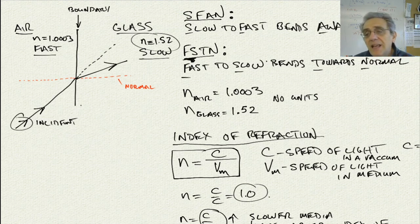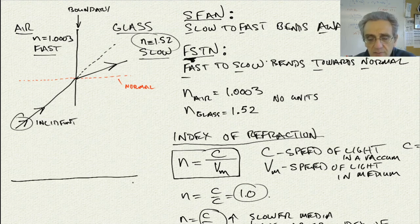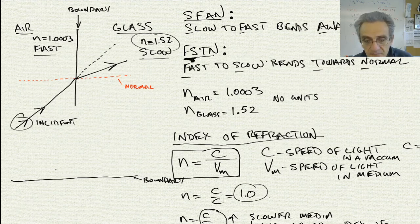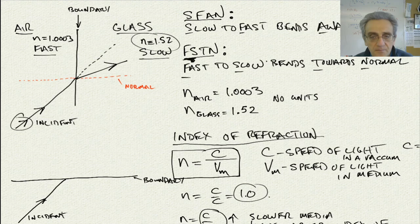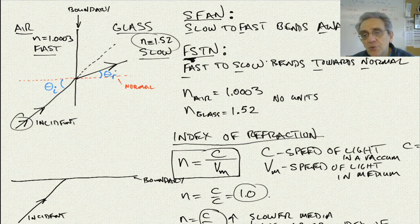The dotted line represents no refraction. Since we bend towards the normal, our direction goes closer to the normal, not away from it. Now let me annotate the angles: this is my angle of incidence — to the normal — and this is my angle of refraction, also to the normal.